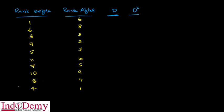We calculate the D-value here, checking whether the difference is negative or positive. Before rank is 1, after rank is 6, so the difference is 5. After rank is 8, difference will be 2. Then after rank is 3, difference will be 0. Then rank 9 versus rank 2, difference is 7.